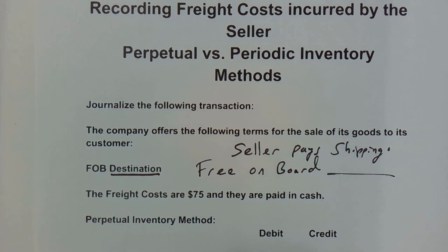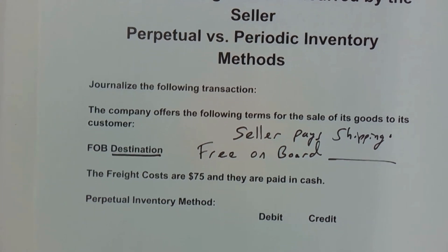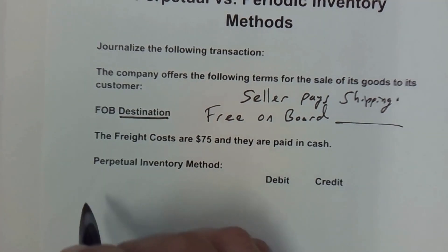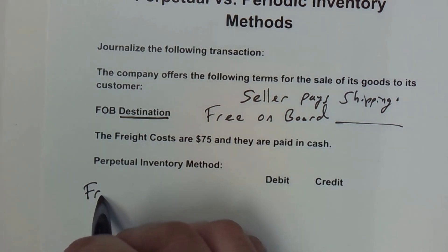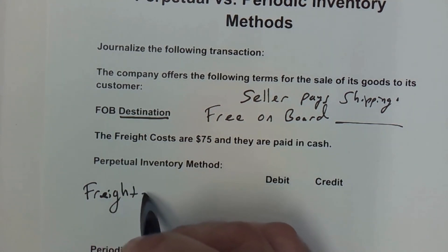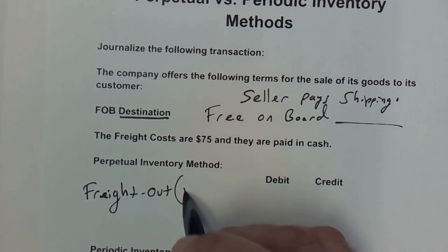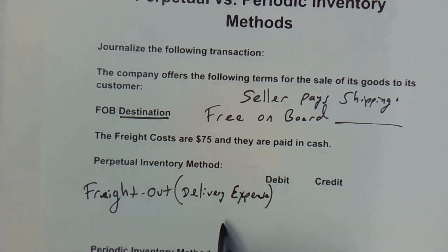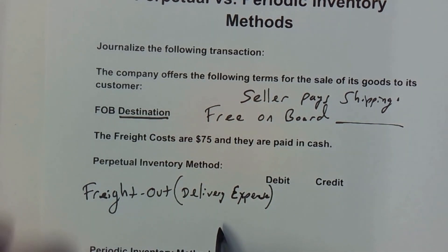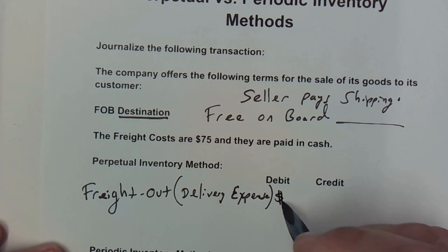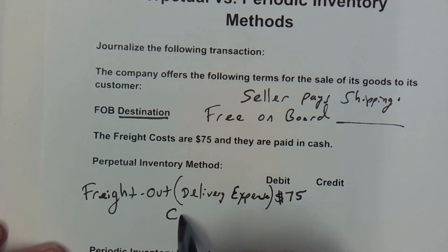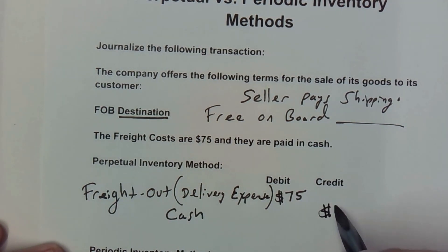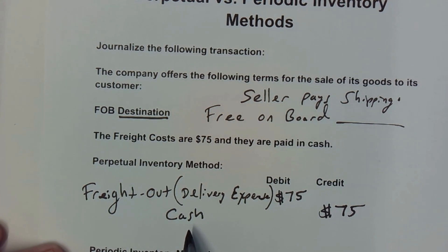Let's see how that is treated in the perpetual inventory method. In that method, there's going to be a debit for freight out, or it might sometimes be called delivery expense, because it is being treated as an operating expense to the seller. We're going to debit the $75 and credit cash for that amount when it is paid by the seller. You have now properly accounted for the freight out delivery expenses in the perpetual inventory method.